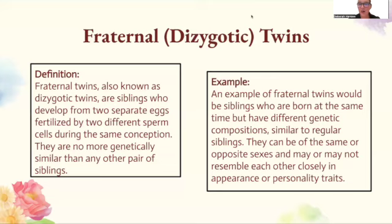Fraternal twins, also known as dizygotic twins, are siblings who develop from two separate eggs fertilized by two different sperm cells during the same conception. They are no more genetically similar than any other pair of siblings. They can be of the same or opposite sexes and may or may not resemble each other closely in appearance or personal traits.